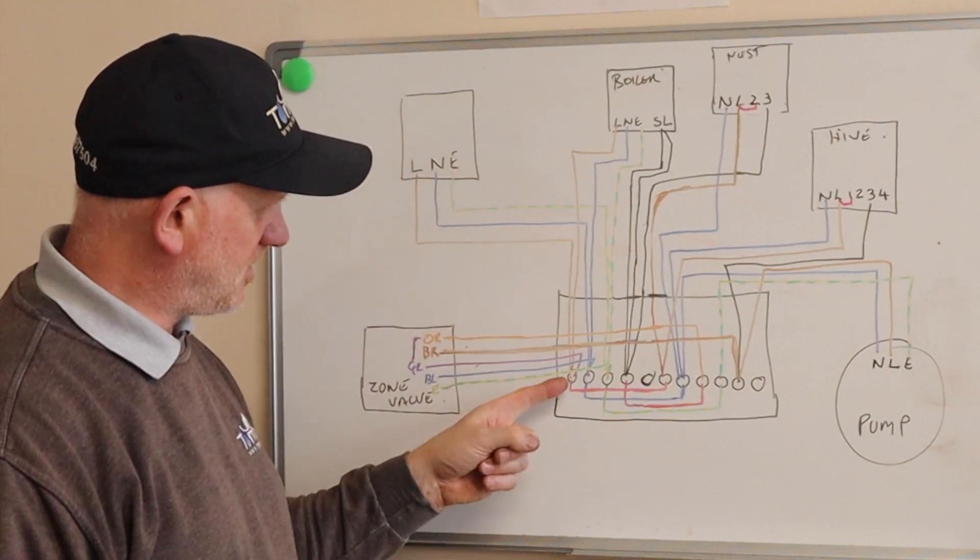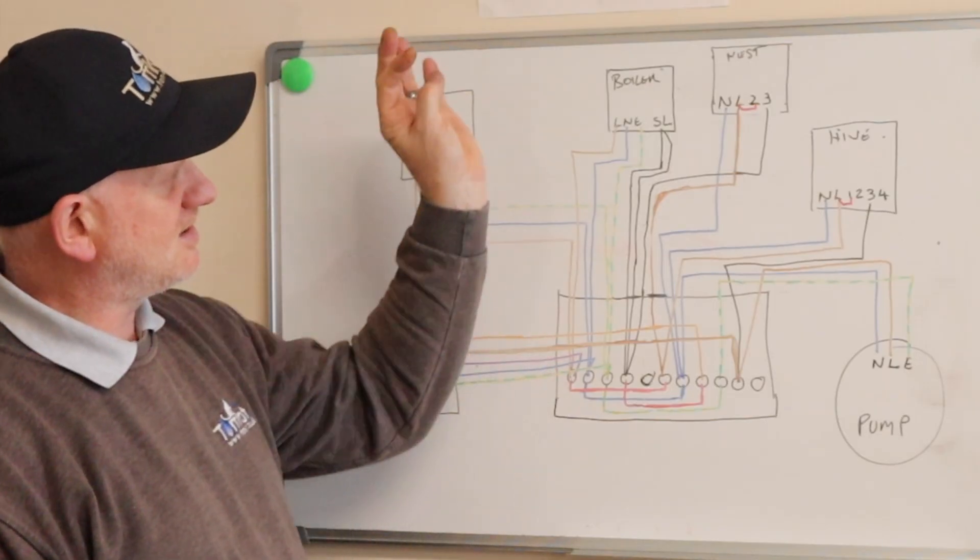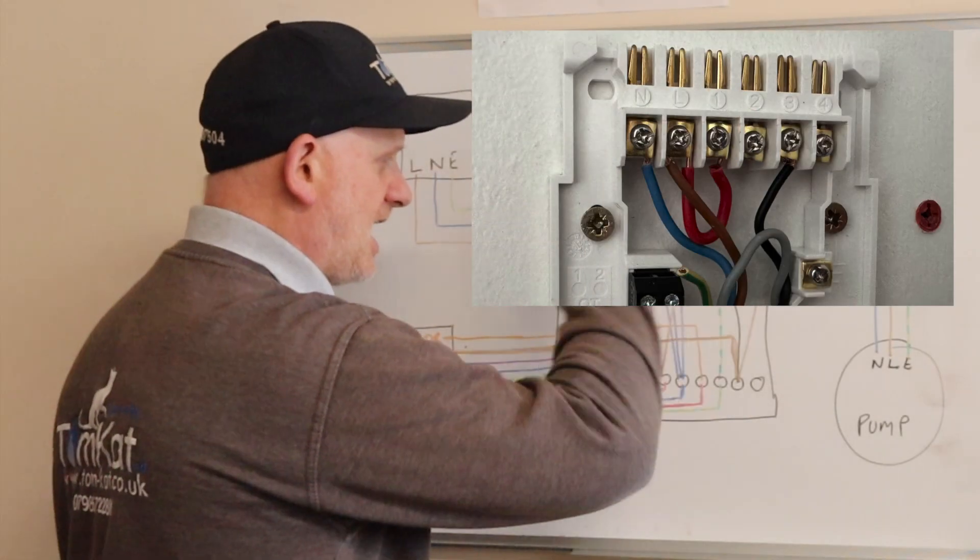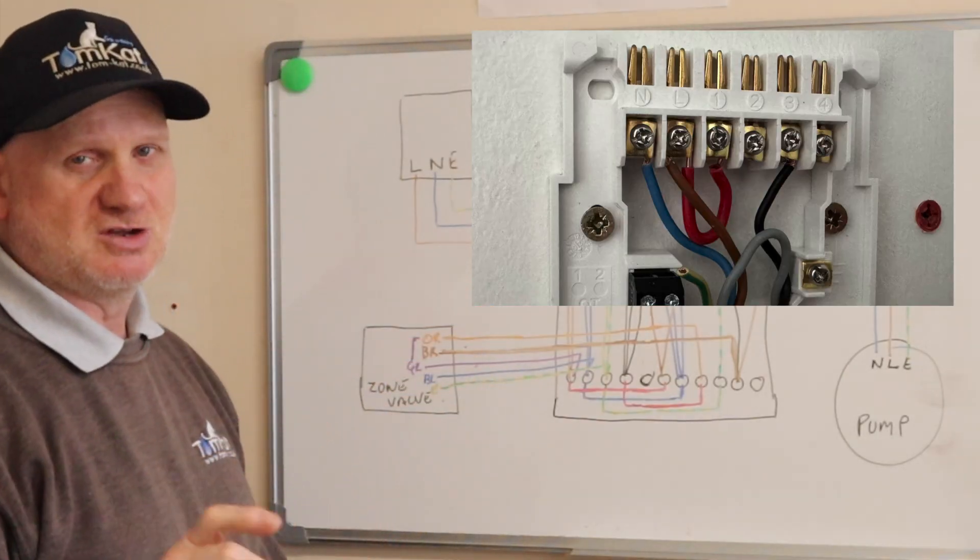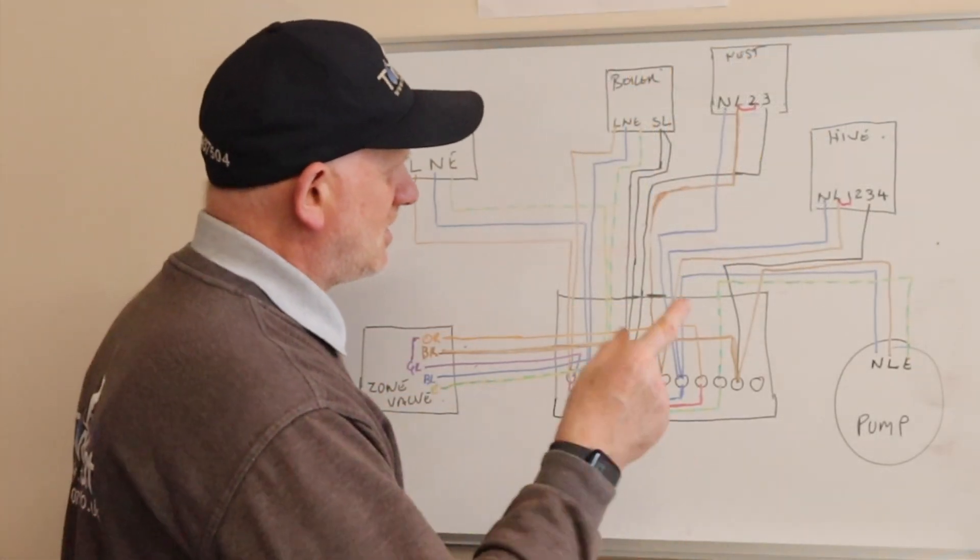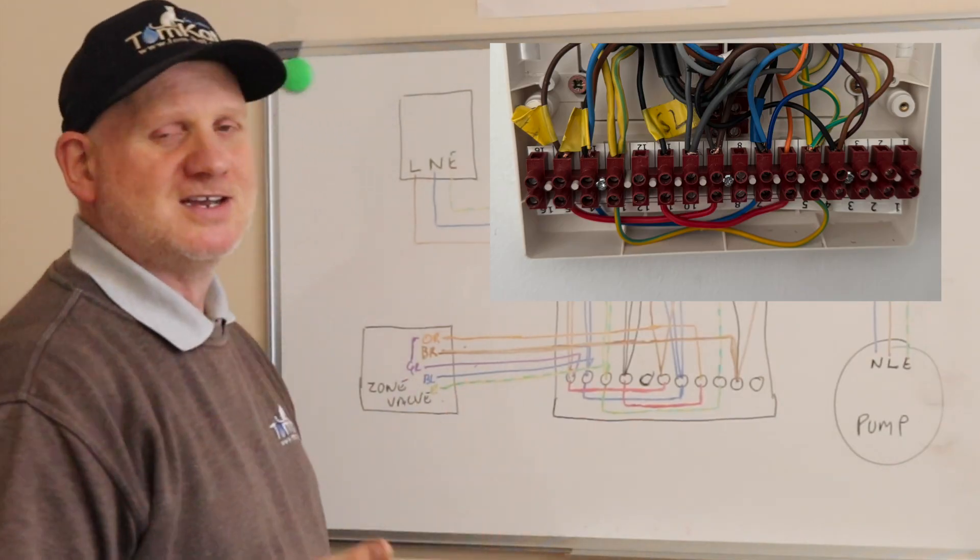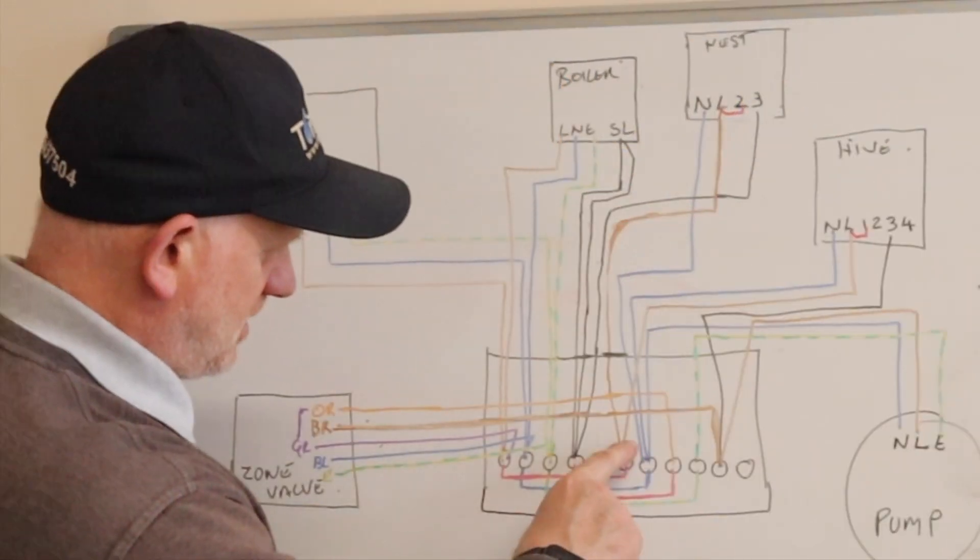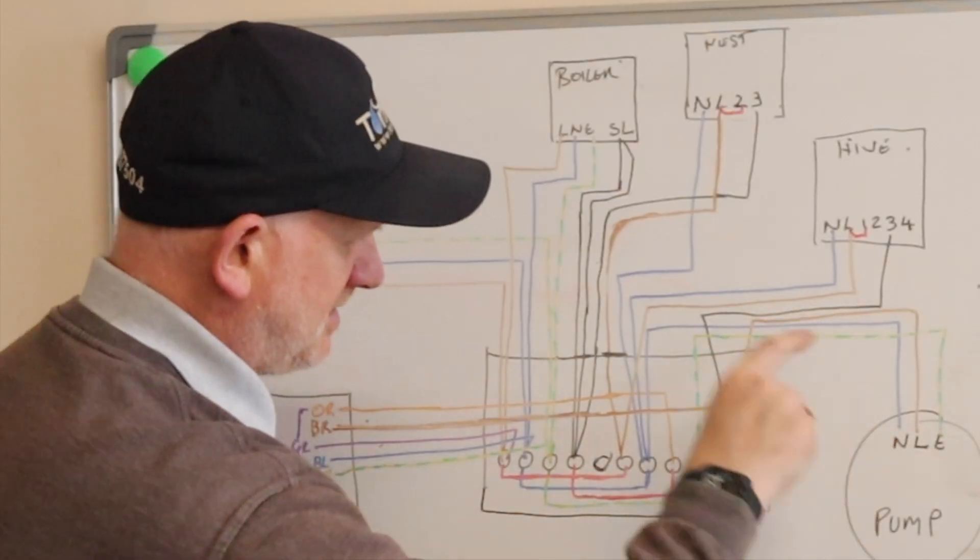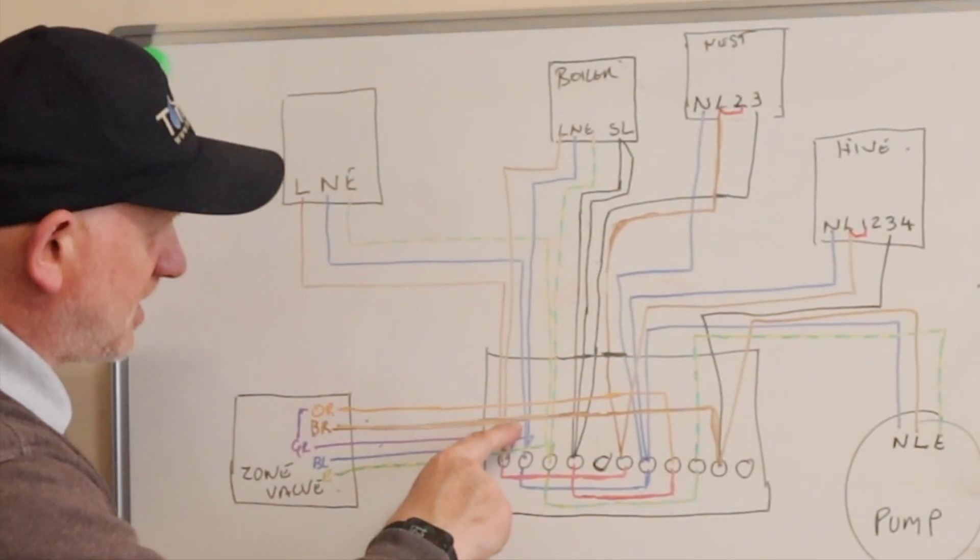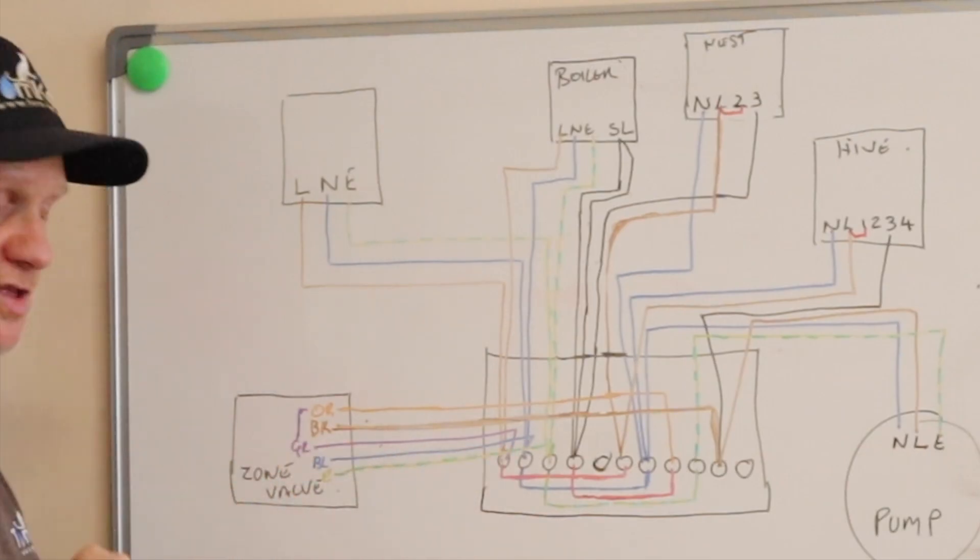All I figured out was what was the live, neutral, and earth going up to the boiler and what the switch live was. I've put live, neutral, and earth into these first three here. The hive required a live and neutral. There's also an earth connection there which I didn't use because it's plastic and it doesn't really need it. I used links so I wasn't trying to cram all the wires into the same block. This is the neutral here so it's feeding the nest, the hive, the pump, and the boiler.